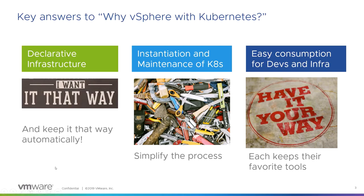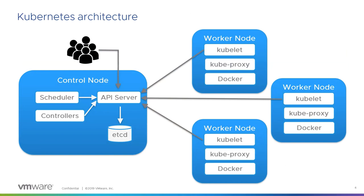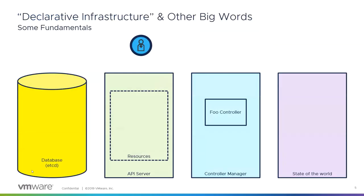Nobody wants to retool or relearn things when they can avoid it. So first, we're going to look at Kubernetes architecture at a really high level. You have your control nodes on the left and your worker nodes on the right. Basically what's going on is the control node takes in the declaration of how your environment should look, then goes out to the worker nodes and makes your environment look like you've asked for it — the right number of replicas running, your pods look as they should.